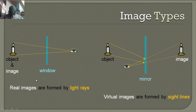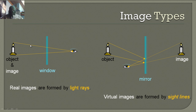We have two different kinds of images. Real images are formed by light rays — that's when we look at the object directly and the image is in the same place as the object. If we're looking through a window, we're seeing real images because the light rays just go right through the window.